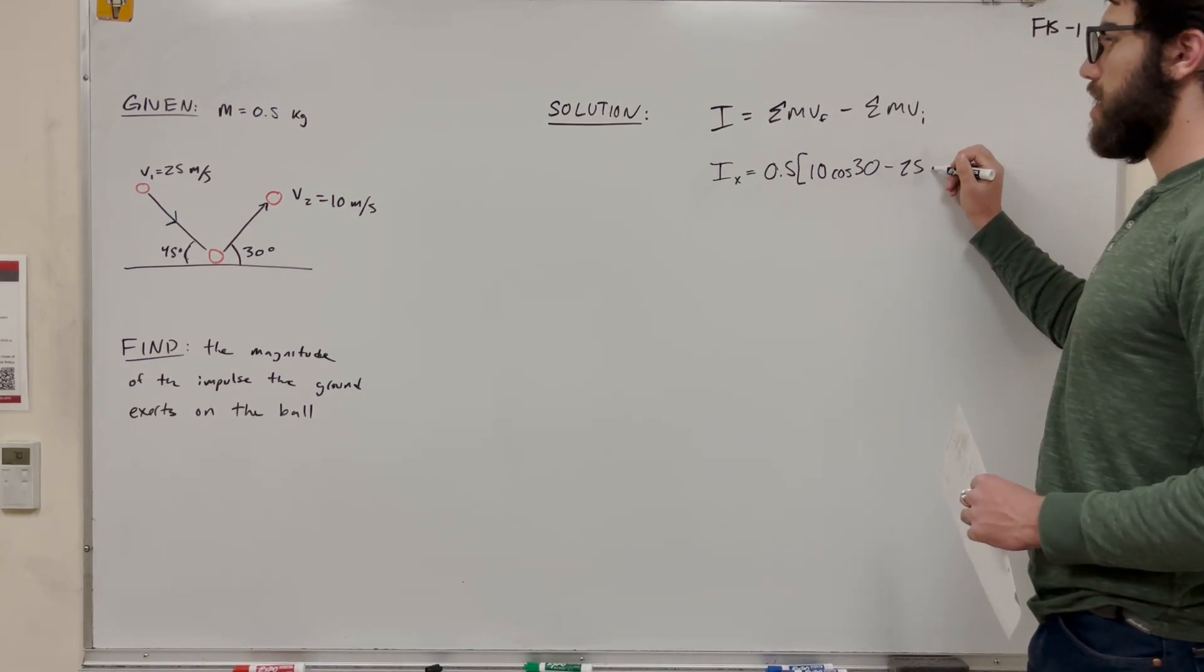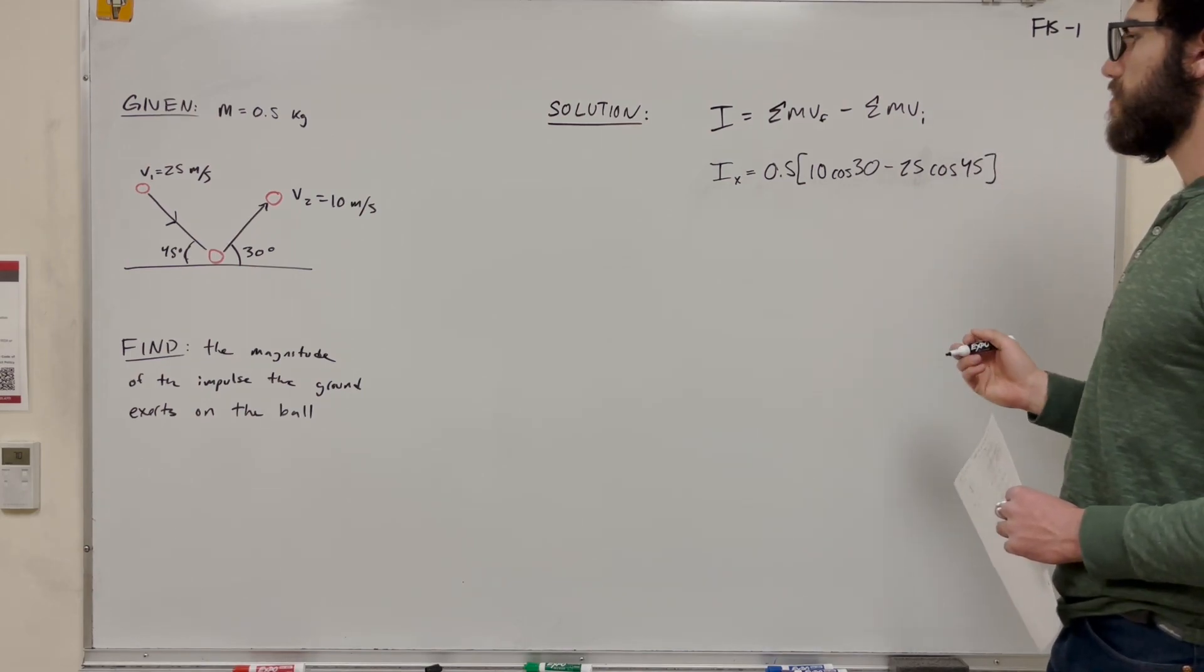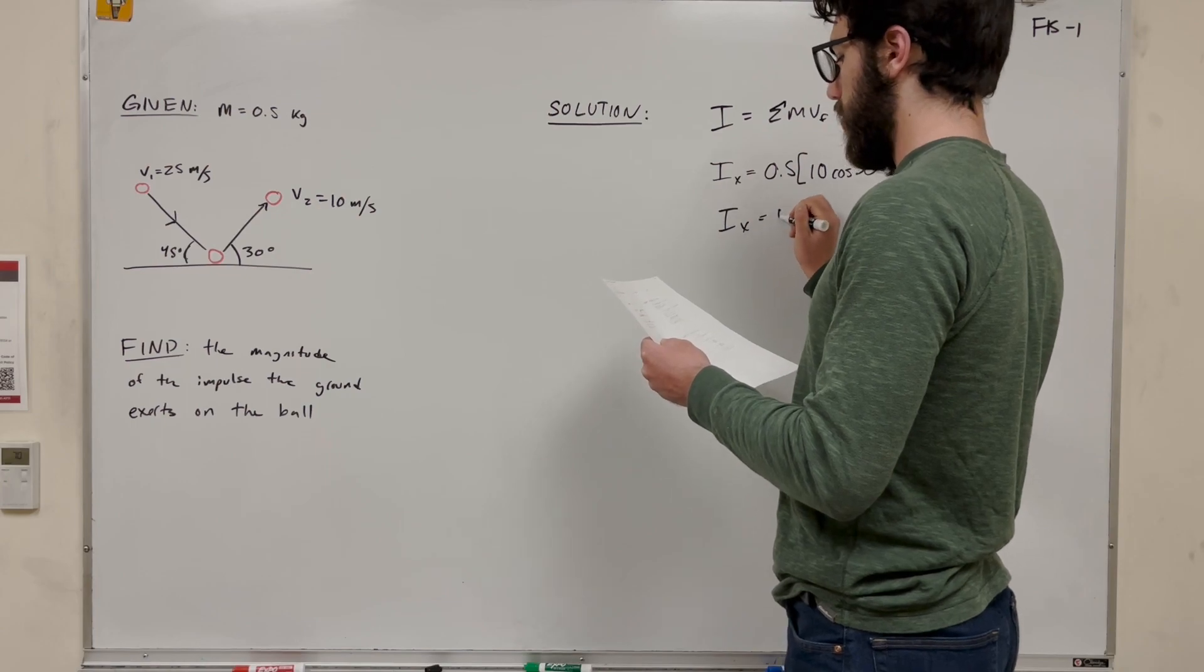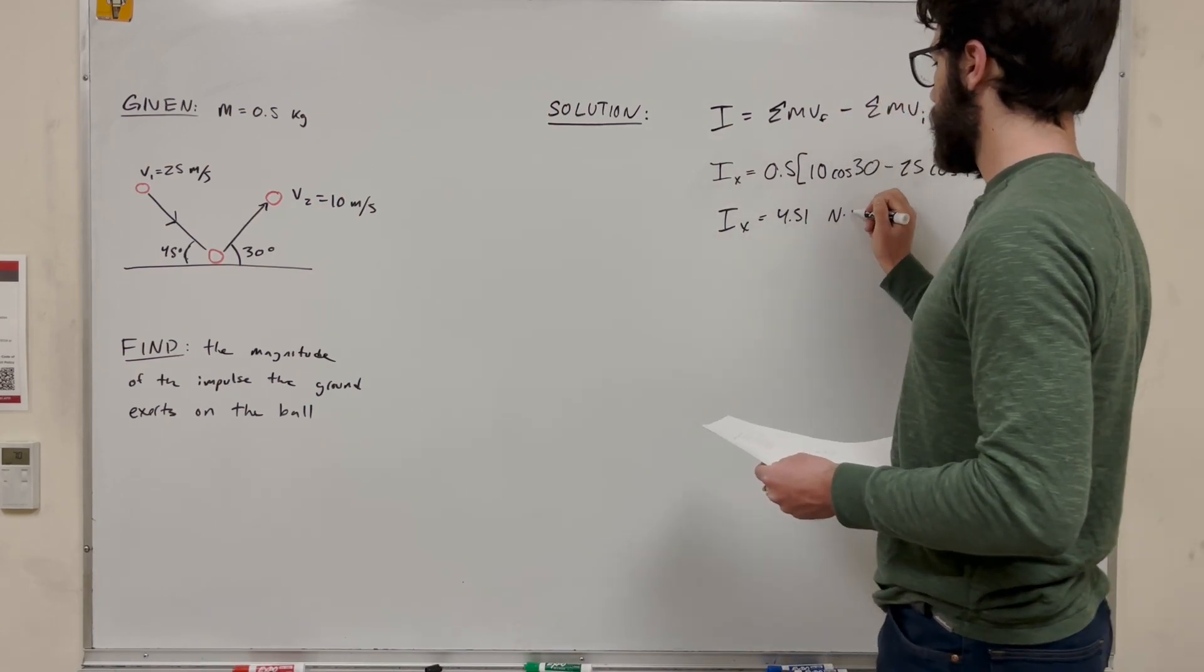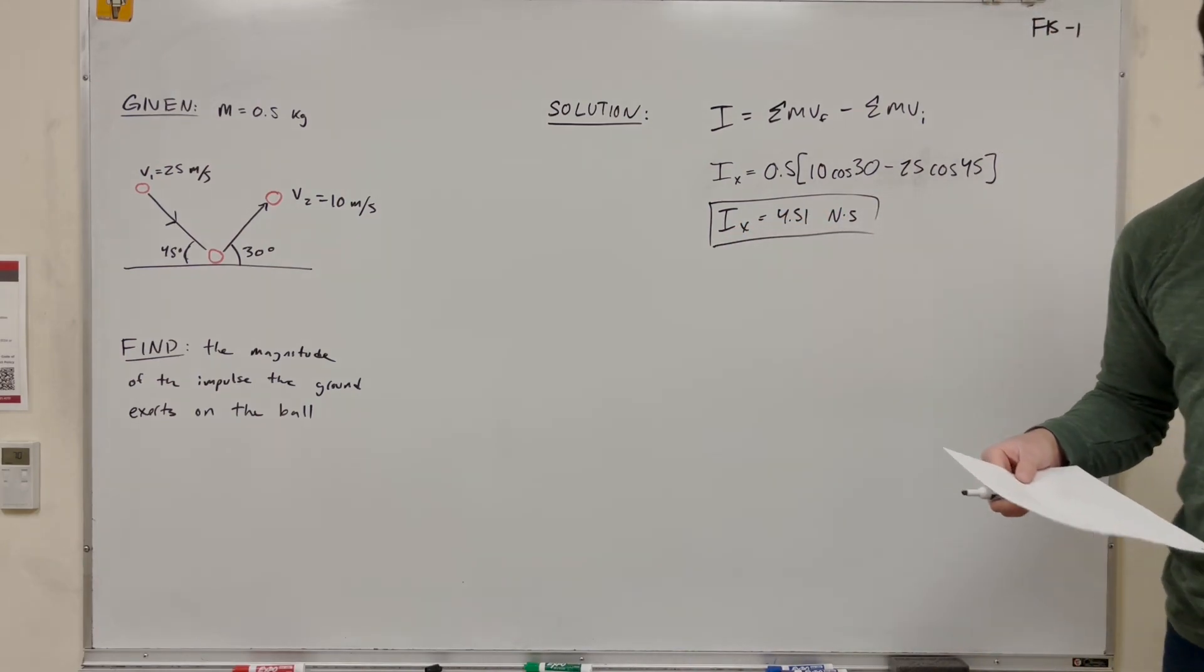We need cosine to break it down - cosine and that angle is 45. So you plug this in and you get 4.51 newton-seconds. This is our x component. Now we need to find the y component.